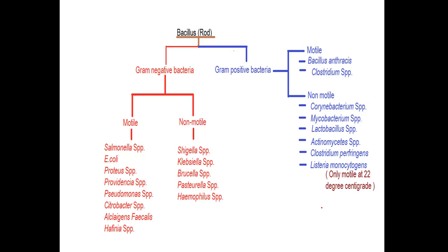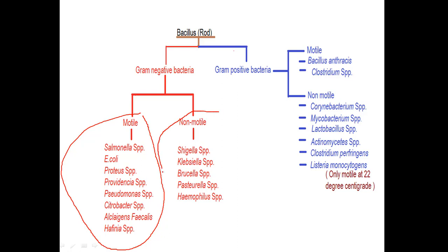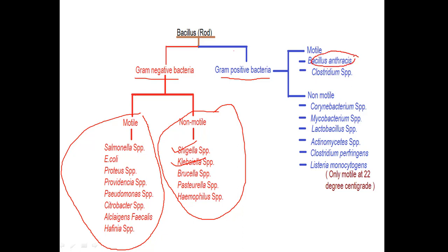The next question is about motile and non-motile bacteria. Motile bacteria include Salmonella, E. coli, Proteus, Providencia, and Pseudomonas. It is better to remember the non-motile bacteria — commonly Shigella and Klebsiella are non-motile gram-negative bacteria. Among gram-positive bacteria, Bacillus anthracis is motile and Clostridium species are motile, while others are non-motile.